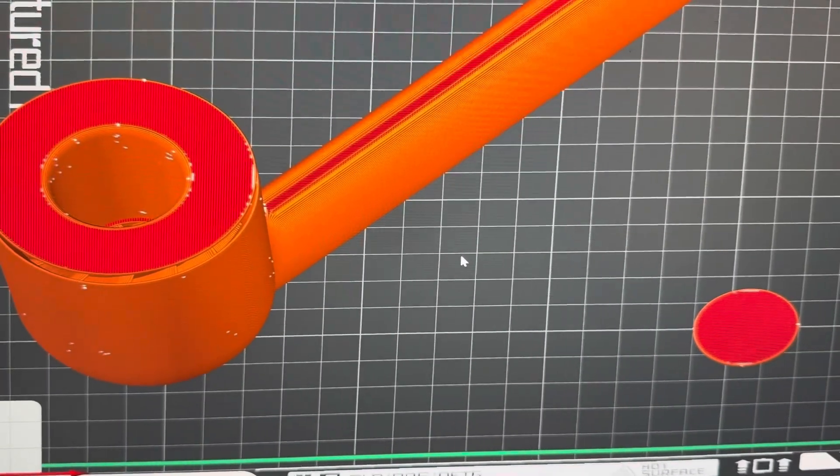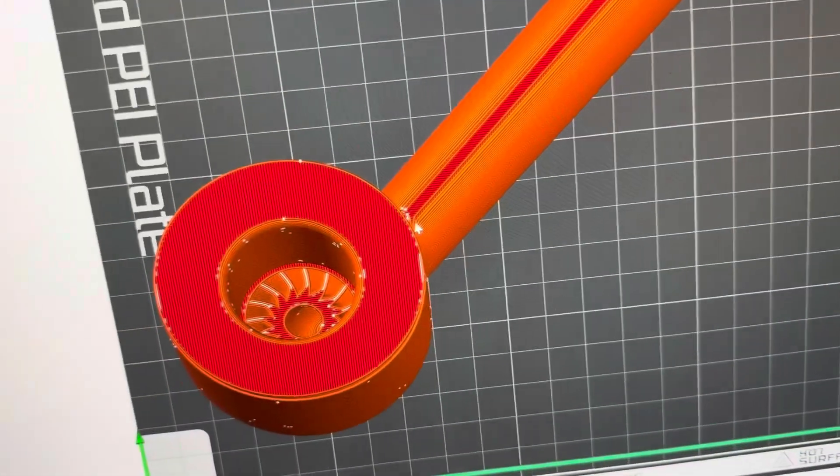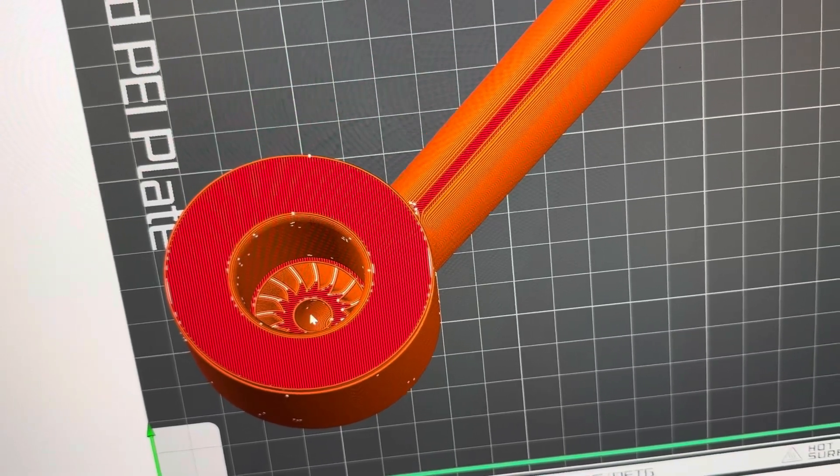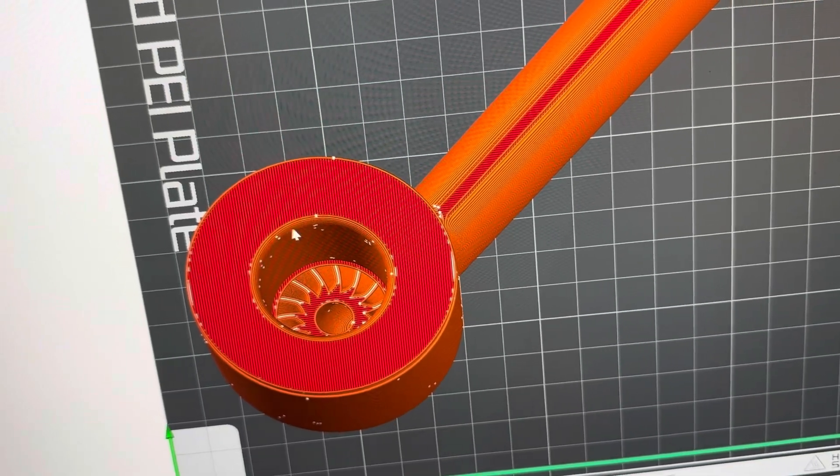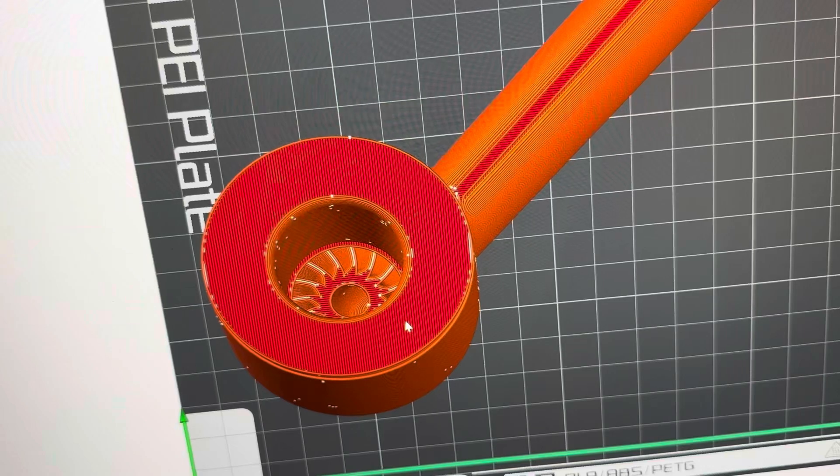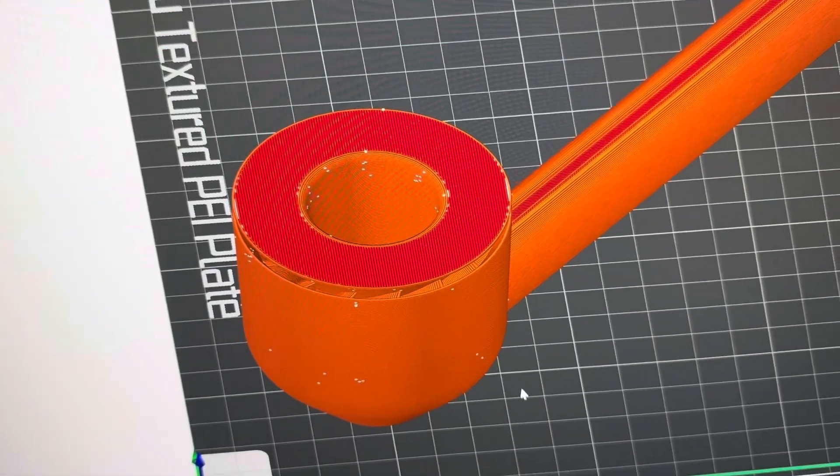And you have to print this disc separately that will later be glued inside of here that stops the water from just spilling out here on the top. And also this is where the magnet is placed in later. And also the tip that I've talked about before will also be printed separately.